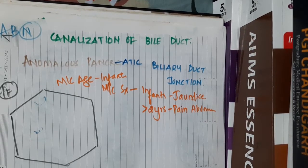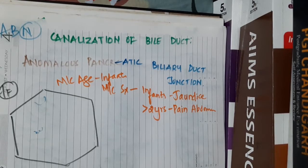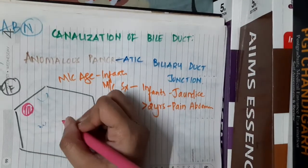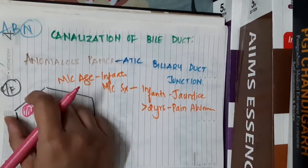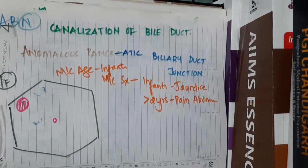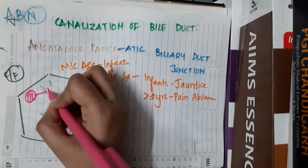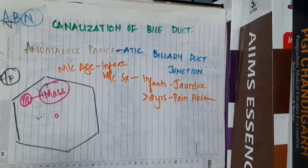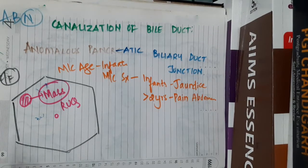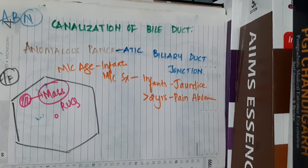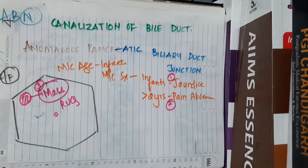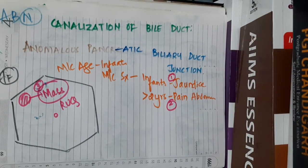The patient presents with obstructive jaundice, pain abdomen, and a mass in the abdomen seen to the right above the umbilicus. This mass is smooth and soft to palpate, does not move with respiration, and is non-mobile, located in the right upper quadrant. The classic triad of choledocal cyst is jaundice, pain abdomen, and a palpable mass.